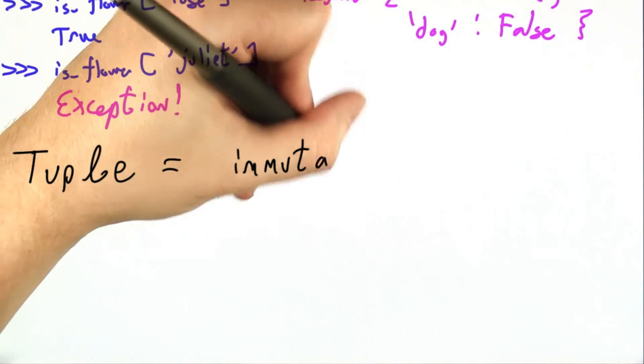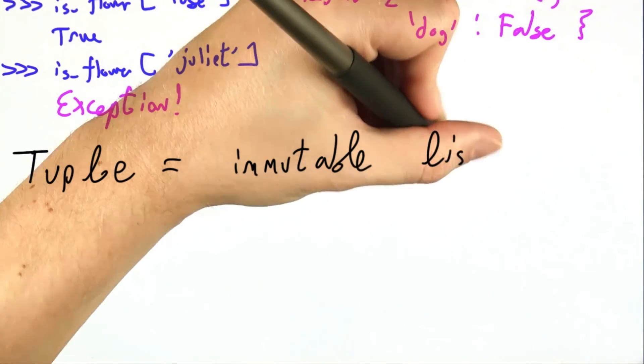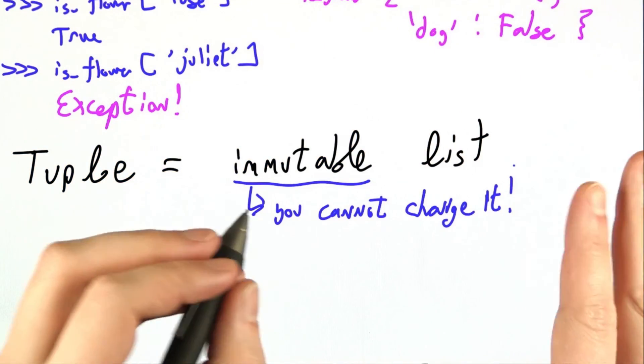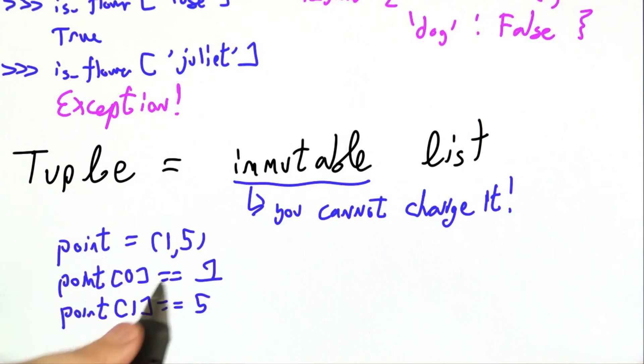A Python tuple is just an immutable list. Immutable means you cannot change it. Once you make it, it is etched in stone. For example, I could make a tuple to hold the Cartesian coordinates of some object. Maybe my point on the grid is at (1,5). I can access its elements the same way I would for a list. The 0th part of point is 1, the 1st part of point is 5.